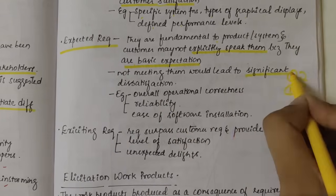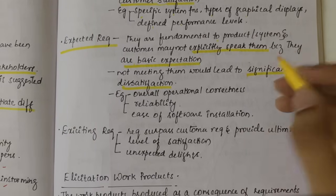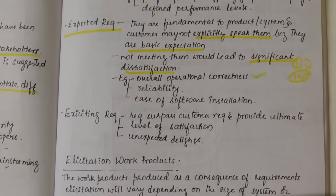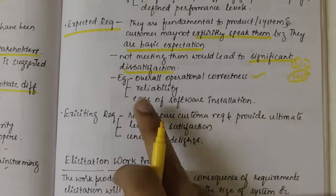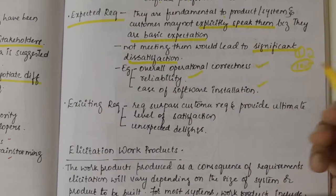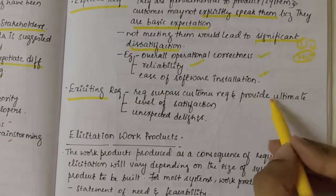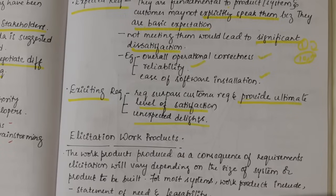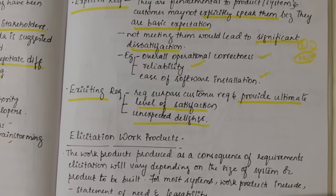Not meeting expected requirements would lead to significant dissatisfaction. They are the minimum things expected — like if the login button doesn't work properly, the customer would be dissatisfied. Reliability issues and ease of software installation come under expected requirements. Exciting Requirements surpass customer expectations and provide an ultimate level of satisfaction and unexpected delight — something the customer was not expecting, but which you provide as an add-on feature, like a gift to the customer.